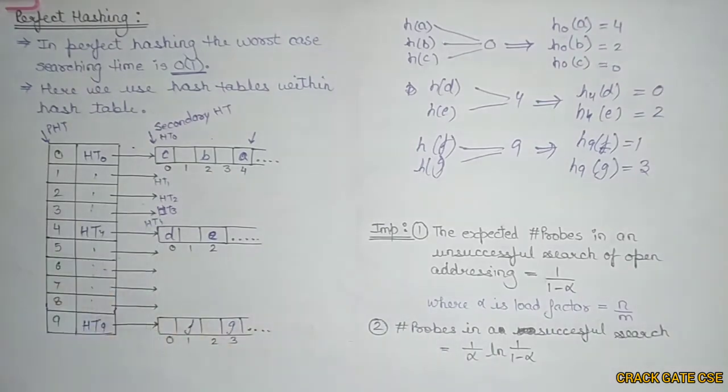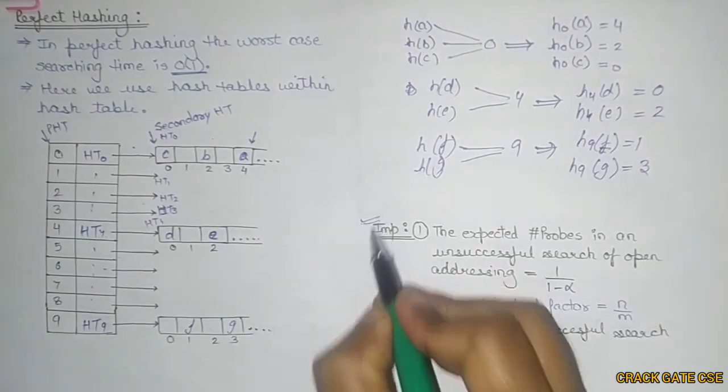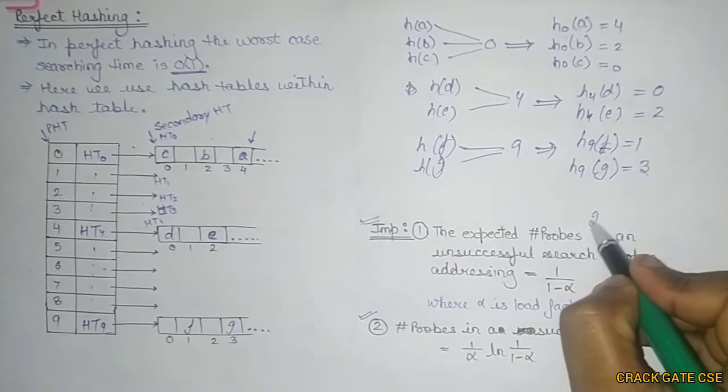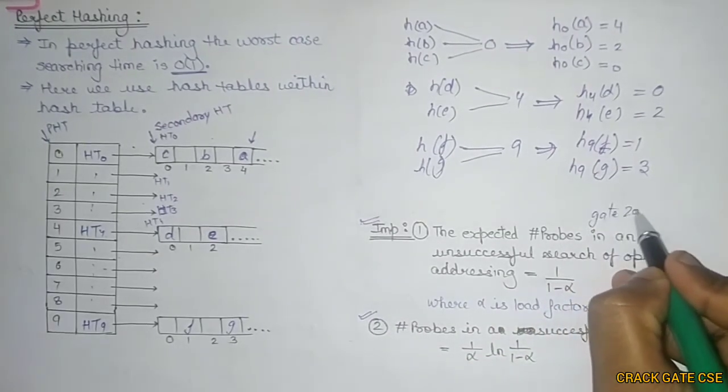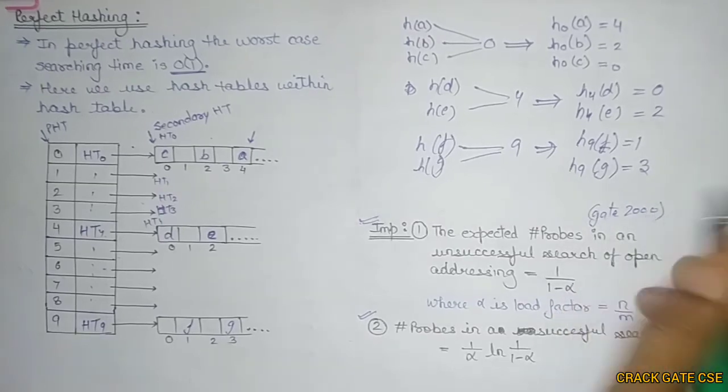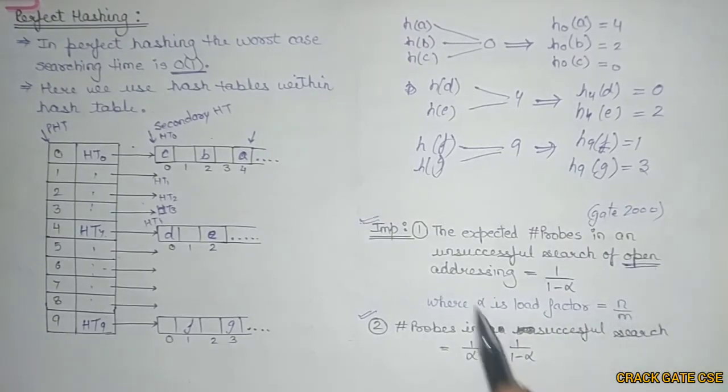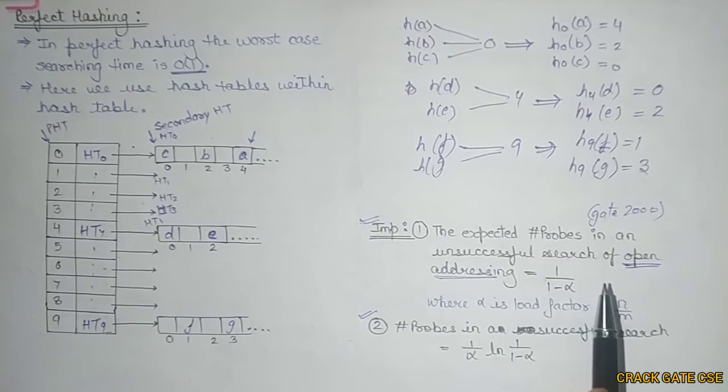Now there are two important formulas that can be asked. These formulas were in questions asked in GATE 2000 - although it's 20 years back, it's worth discussing all these formulas. If they ask what is the expected number of probes in an unsuccessful search for open addressing - here we're talking about open addressing, that means the three techniques like linear probing, quadratic probing, and double hashing.